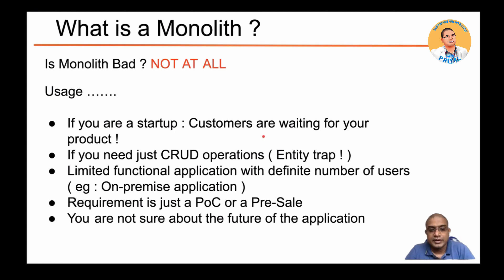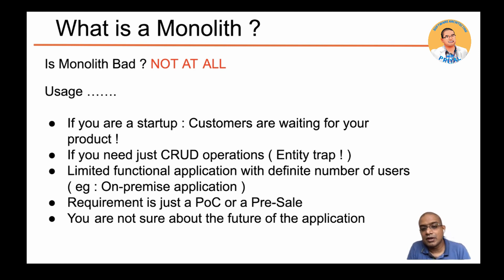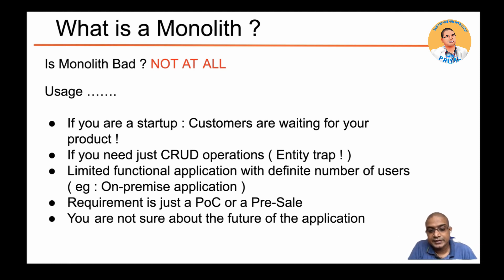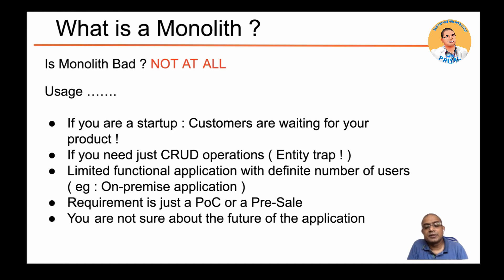Another case for using a monolith: limited functionality applications. If you're deploying an on-premise application where the number of users won't grow beyond, say, 100, and new functionality will rarely be added — if there's no requirement for scaling or elasticity — then it's better to go with a monolith. Similarly for POC or pre-sales: you don't want to build a complex architecture for a POC when the future of the application is uncertain. Start with the monolith and focus on functionality.